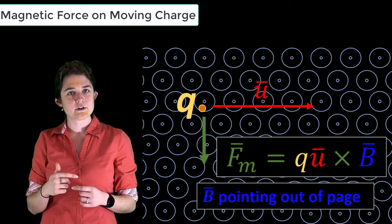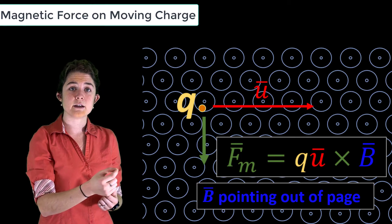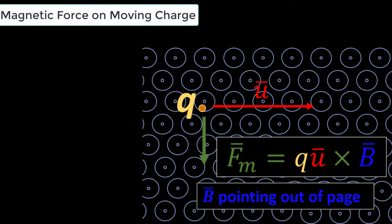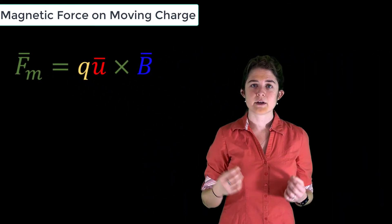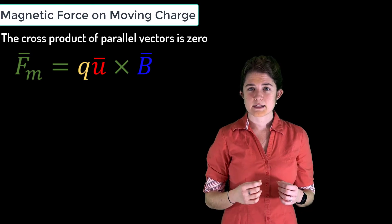proportional to the magnitude of the charge q and the cross product of the charge's velocity u with the magnetic flux density B. Consider this for a moment: the cross product of parallel vectors is zero. That means that if